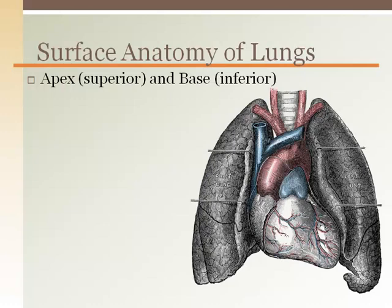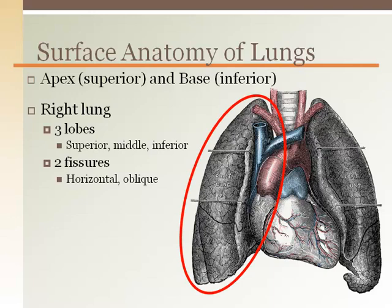The top of the lungs is the apex, and the broad bottom that rests on the diaphragm is called the base. The surface anatomy of the lungs differs slightly from the right to the left. The right lung has three lobes: superior, middle, and inferior.